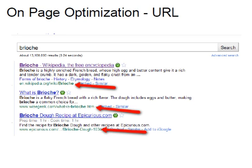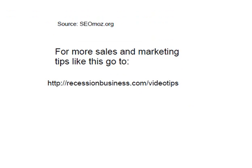Flipping back to the Google listing, we can see that all those characteristics are present in the top three listings out of 13 million. The clear evidence is that URLs — your page names — do play a significant role in SEO, and it's something you want to integrate into your page organization and design. This tip is from seomoz.org. For more sales and marketing tips like this, go to recessionbusiness.com/videotips.